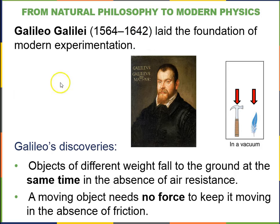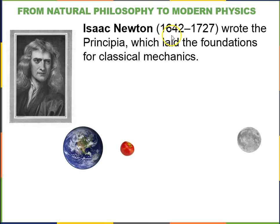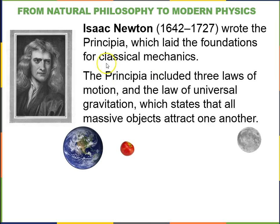Now 1642, the year that Galileo died, happens to be the year that Isaac Newton was born. And Isaac Newton wrote the Principia, which mathematically put down a lot of the same ideas that Galileo came up with, and included three laws of motion, and the law of universal gravitation.